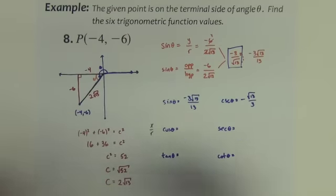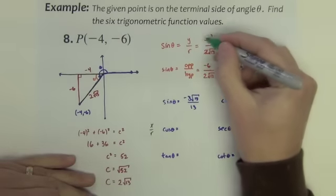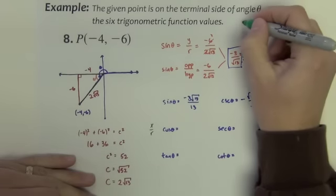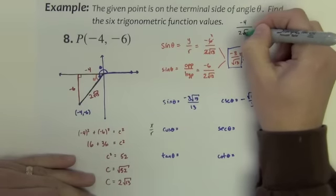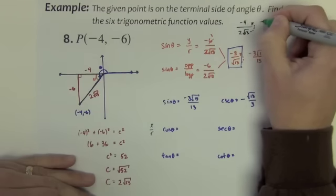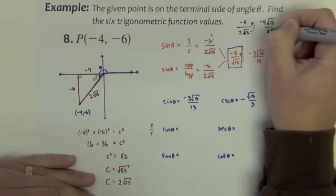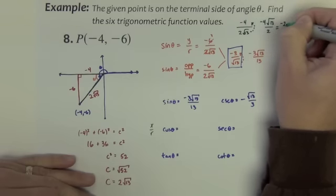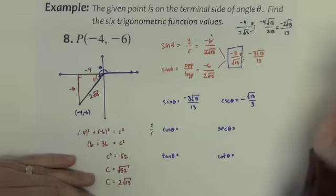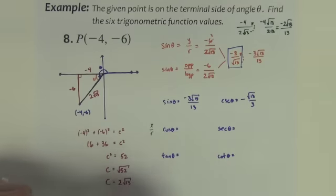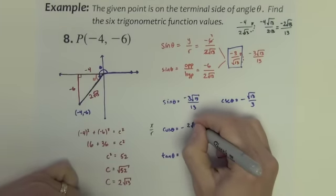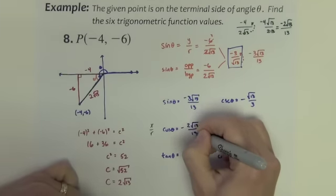So I would write it out like this with the negative 4. Negative 4 over 2 square root of 13. Bring up the radical. Negative 4 square root of 13 over 2. Reduce down. We get negative 2 square root of 13 over 13.